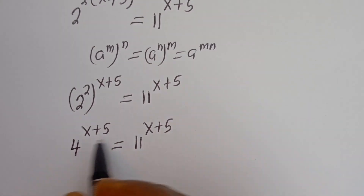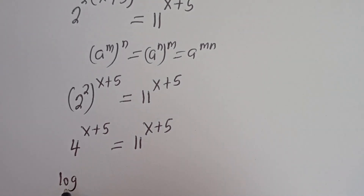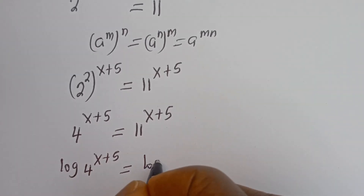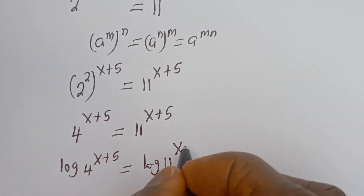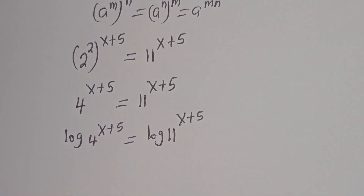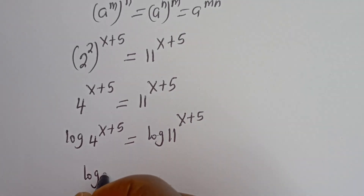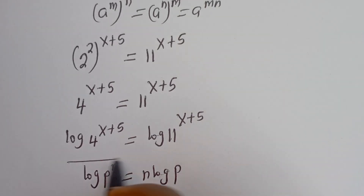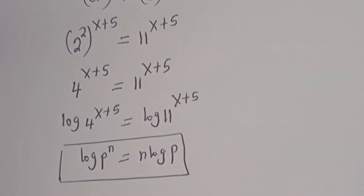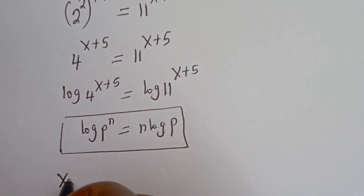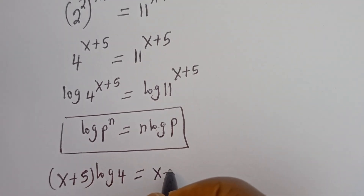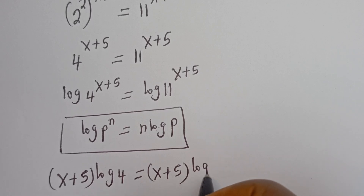Now let's take the log of both sides. We have log of 4 to the power of x plus 5 is equal to log of 11 to the power of x plus 5. Using the rule that log p to the power of n equals n log p, this can be written as (x plus 5) log 4 is equal to (x plus 5) log 11.